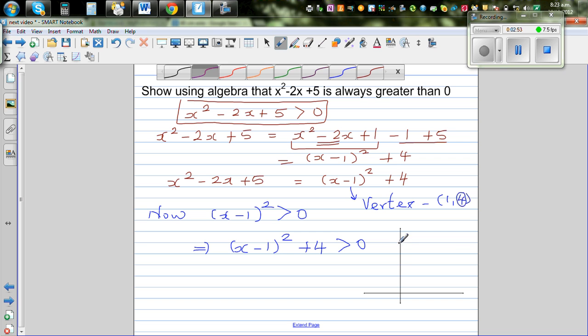The sketch is like this. Okay, so this point is, we know the y intercept is going to be 5, and this point is 1 comma 4. So take any value of x, your y value is never going to go below 4.